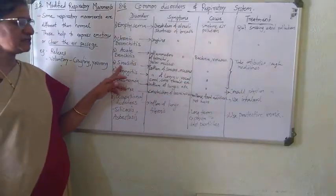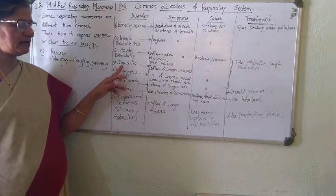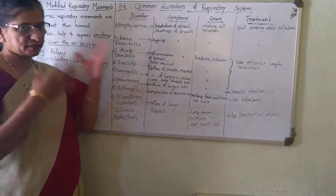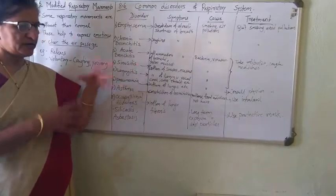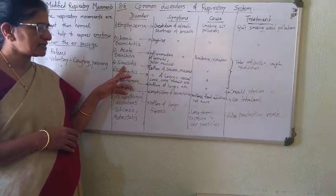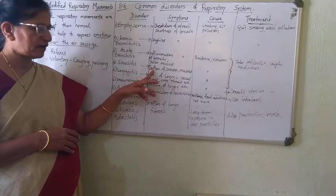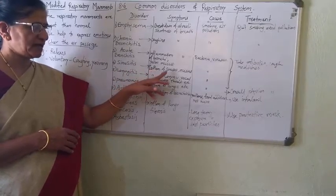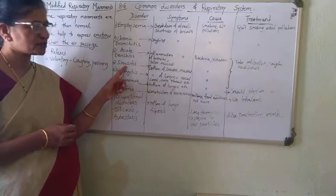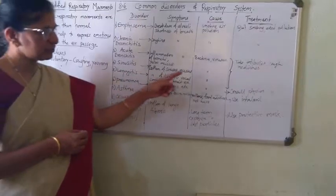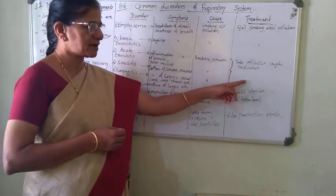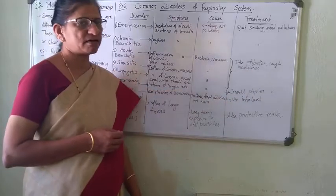Next is sinusitis. Sinuses are air spaces present inside our skull region. When these sinuses get inflamed and swollen, mucus starts filling into them, creating the disorder sinusitis. The cause is again bacterial or viral infection. Treatment is the same — take antibiotics or cough medicines.